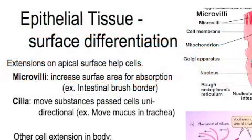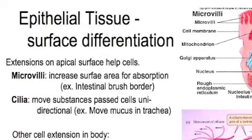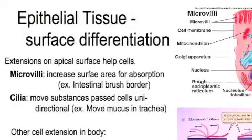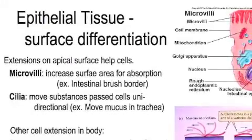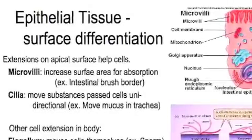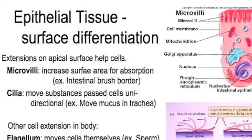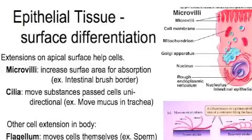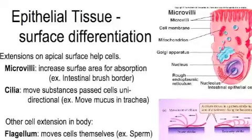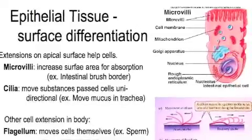Next are surface differentiations — extensions on the apical surface of a cell. Microvilli are the smallest extensions; the cell membrane creates small finger-like projections to increase surface area for absorption. A good example is the intestinal brush border, where the smallest food molecules get absorbed. Cilia are long extensions designed to move substances past cells in a unidirectional manner. For example, in the trachea or windpipe, cilia push mucus out of the trachea — sometimes we swallow it, but still.